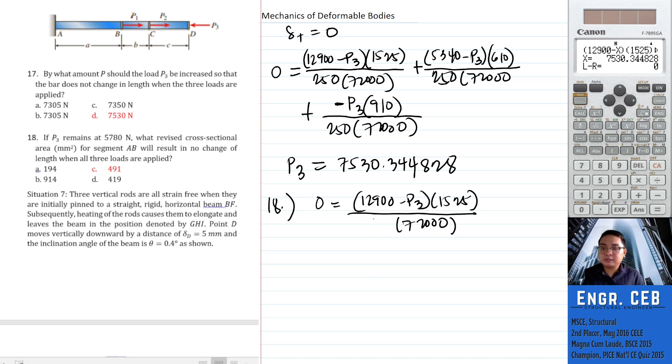Instead of 250, let's say A sub AB. The other segments remain the same, area 250. Then we have 340 minus P3 times 610 divided by 250 times 72,000 plus negative P3, 910 over 250, 72,000.